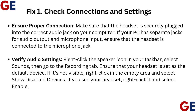Verify audio settings: right-click the speaker icon in your taskbar, select Sounds, then go to the Recording tab. Ensure that your headset is set as the default device. If it's not visible, right-click in the empty area and select Show Disabled Devices. If you see your headset, right-click it and select Enable.